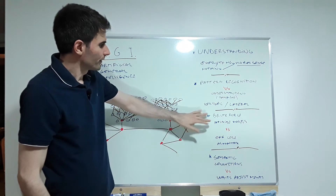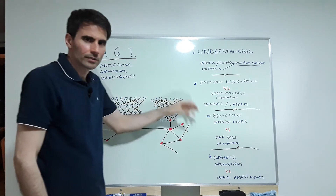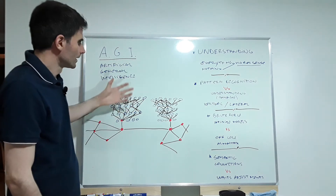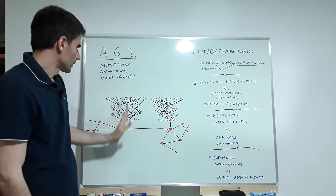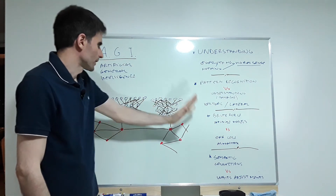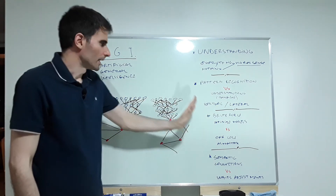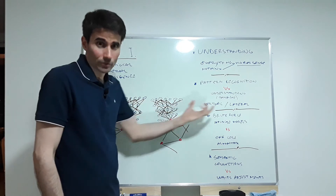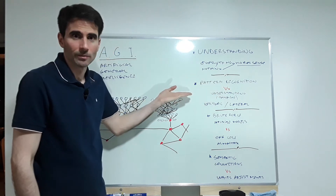Without semantic understanding, every new thing you want to recognize has to be trained with millions or billions of examples — brute force. When you want to recognize songs, another animal, a street sign, you need yet another neural net trained on billions of examples. No matter how many times you do this, you're only getting better at pattern recognition — you're never leaving pattern recognition.